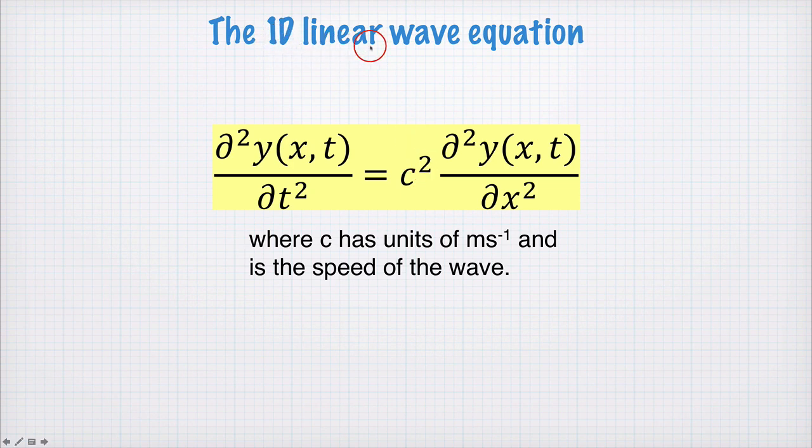This is the one-dimensional linear wave equation. On the left-hand side we have a second derivative with respect to time. On the right-hand side we have a second derivative with respect to space. These two second derivatives are equal up to this constant c squared. c has units of meters per second and c is the speed of the wave.